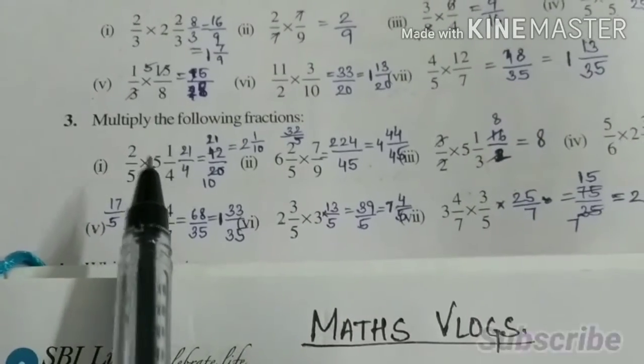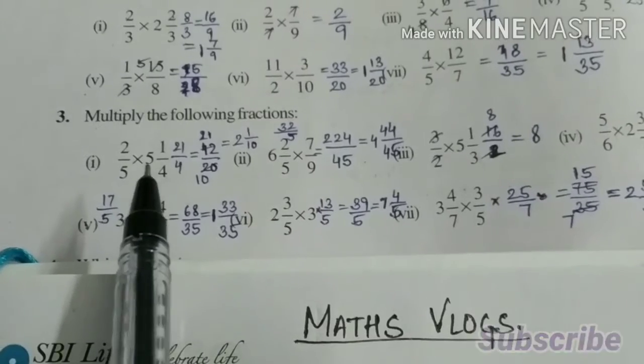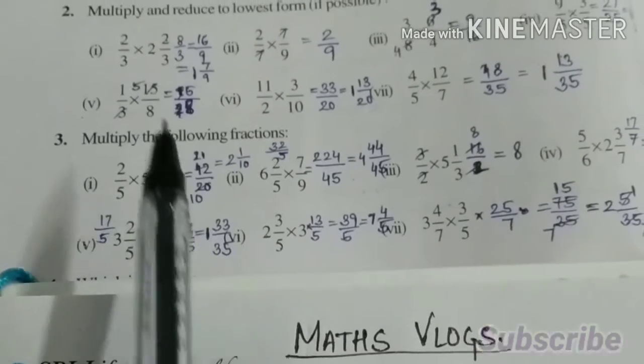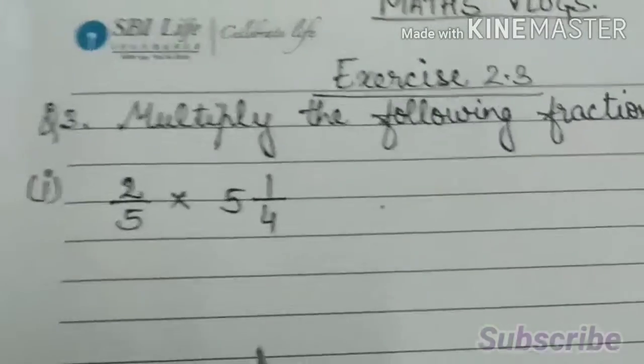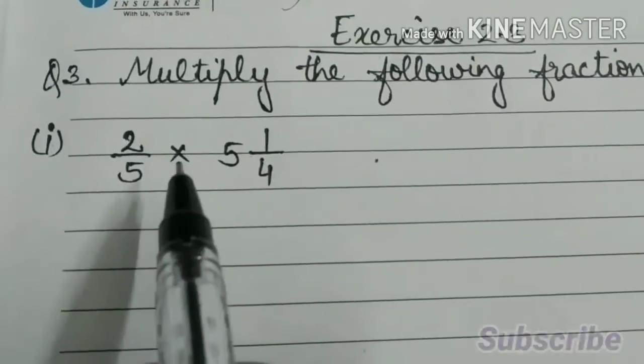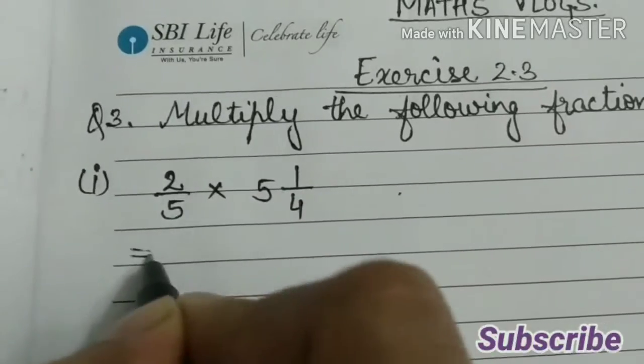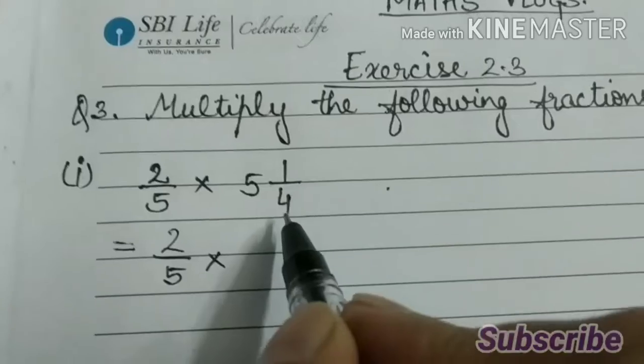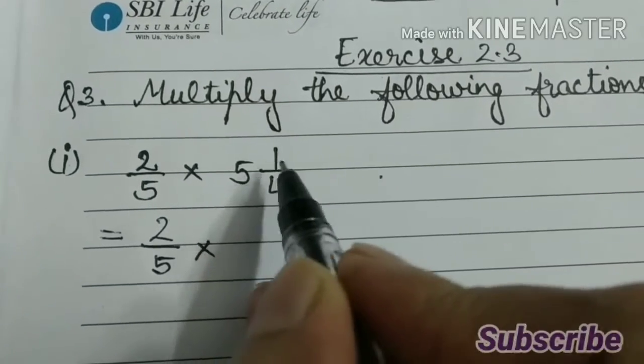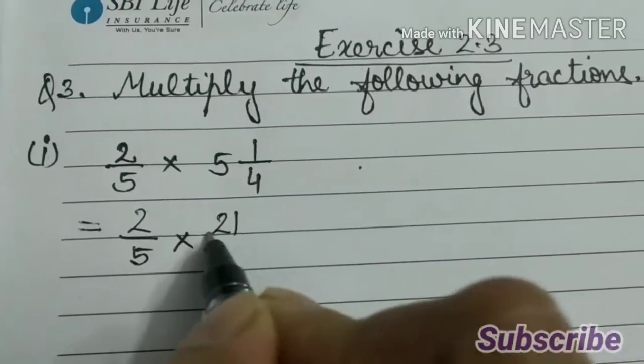First part: 2 by 5 into 5 1 by 4. This is like the second question. Let us solve first part 2 by 5 into 5 1 by 4. So 2 by 5 into, 4 5s are 20 plus 1, 21 by 4.